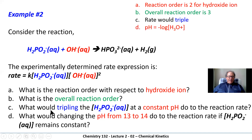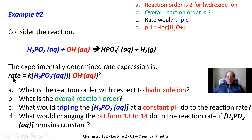Changing the pH from 13 to 14 is trickier. The pH scale is logarithmic, so a change from 13 to 14 increases the hydroxide ion concentration by a factor of 10. Since the reaction is second order with respect to OH⁻, the rate increases by 10 squared, which is 100. The overall rate goes up by a factor of 100.